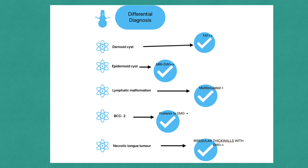A fourth differential is the second branchial cleft cyst, which is also seen in the submandibular space near the angle of the mandible. To differentiate: a ranula will have extension into the sublingual space, while branchial cleft cysts are exclusively in the submandibular space and do not extend into the sublingual space. Additionally, second branchial cleft cysts displace the submandibular gland anteriorly, while ranulas displace it laterally.